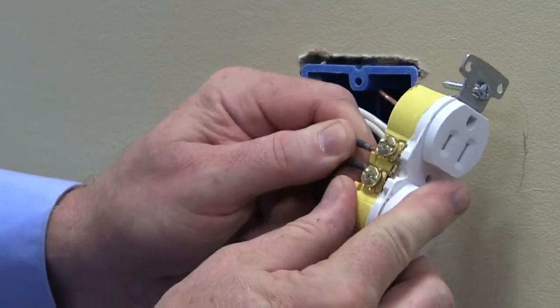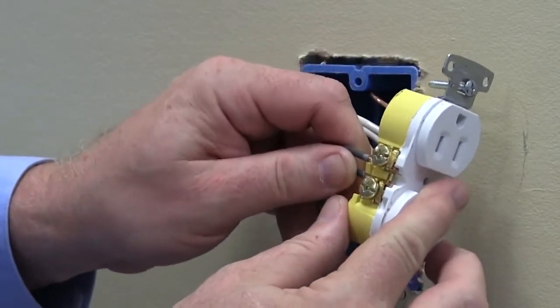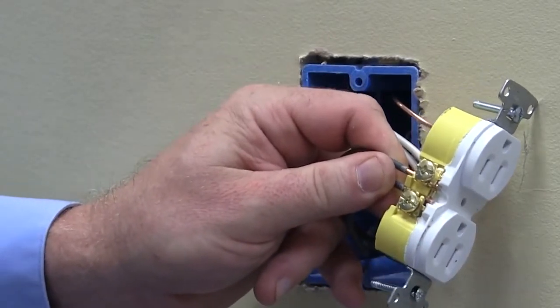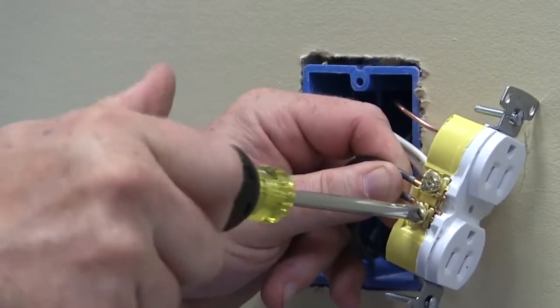Now, take your black wire and follow the same steps but on the brass side. Once positioned and connected, screw down clockwise to terminate the wires.